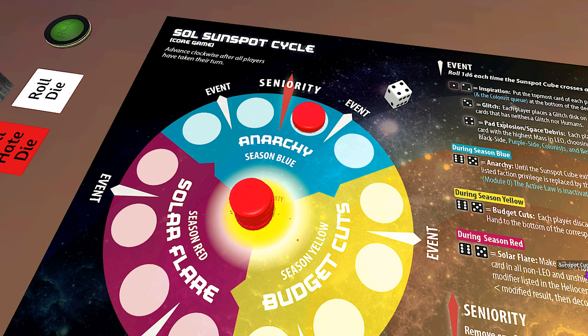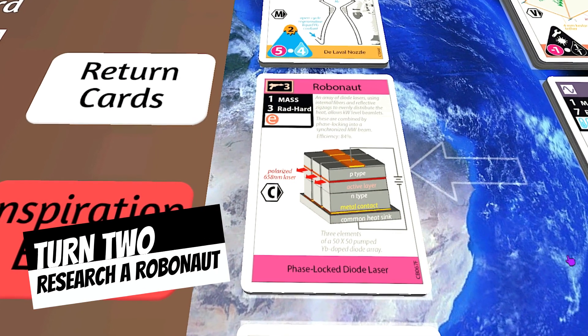The sunspot cycle advances, triggering the event. I roll a four, which is a pad explosion/space debris. Since I don't have any equipment in low Earth orbit, no problem there.